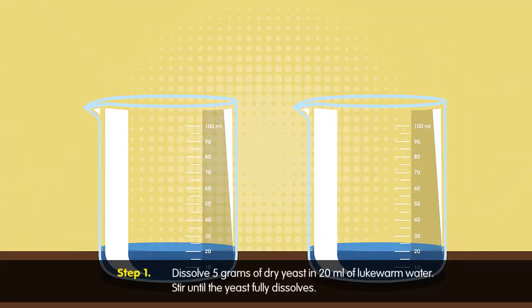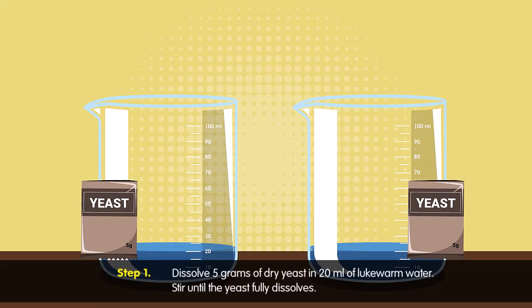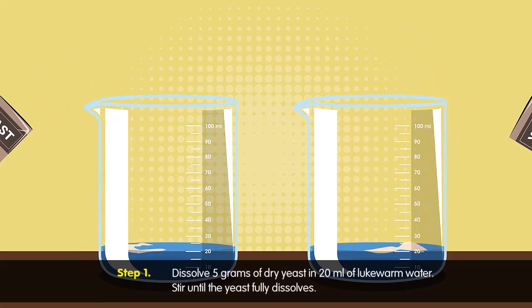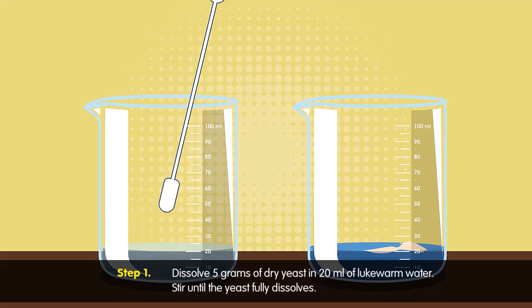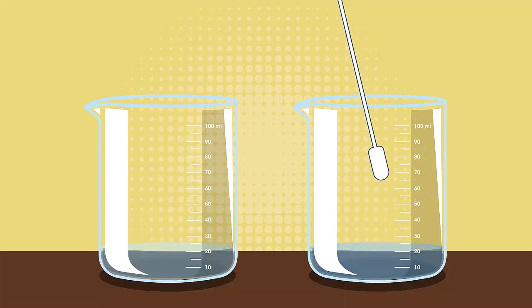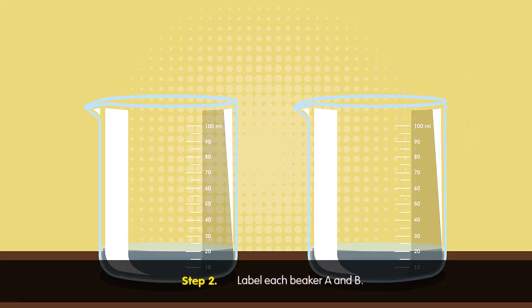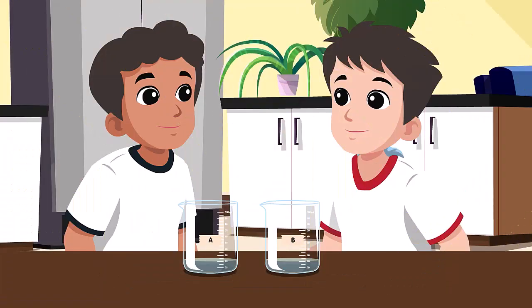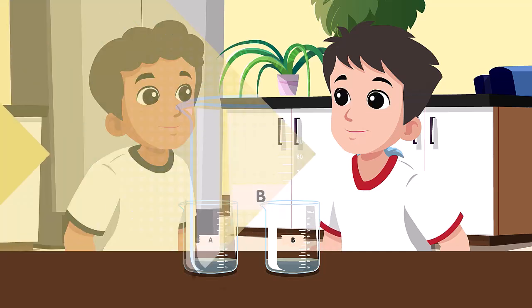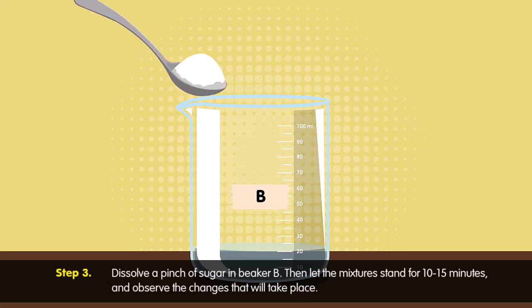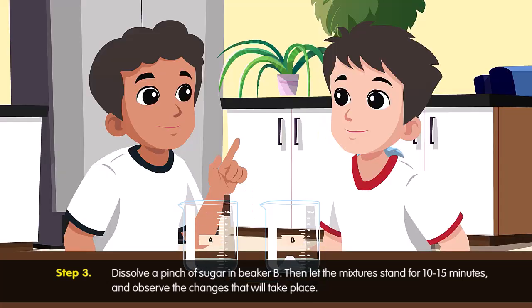First, into separate beakers, dissolve 5 grams of dry yeast in 20 milliliters of lukewarm water. Stir until the yeast fully dissolves. I have fully dissolved the yeast in each beaker. Now label each beaker A and B. Here they are, now labeled.